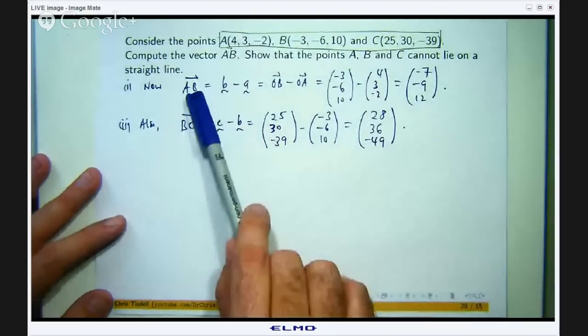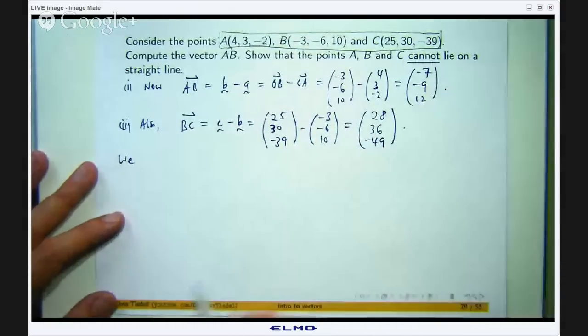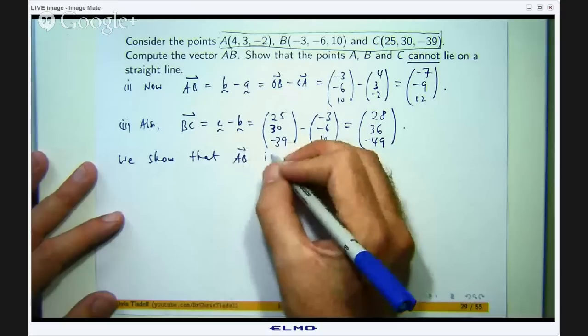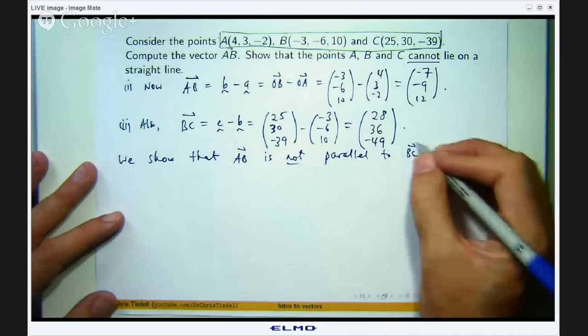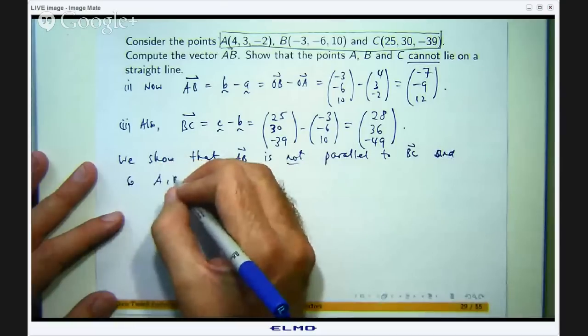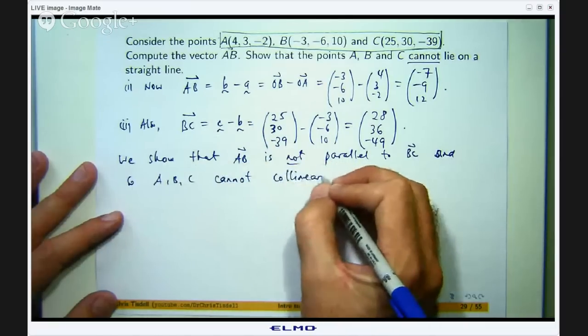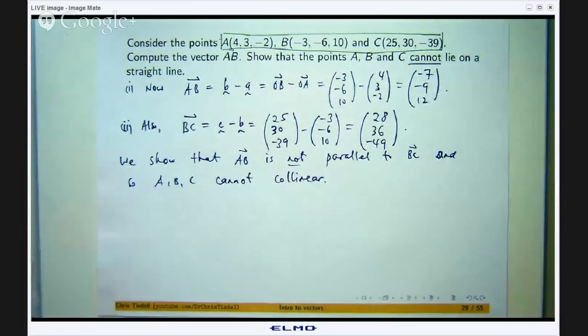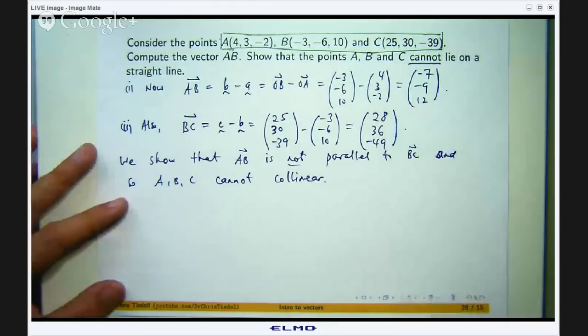So now the question is, is this vector parallel to this vector? Remember what we want to do is show that these points cannot lie on the same line, so we show that AB is not parallel to BC and so A, B and C cannot be collinear. So how do we show that this vector is not parallel to this vector? Well, we know that two vectors are parallel if one is a scalar multiple of the other. In other words, there is some number such that this vector times that number equals this vector, or vice versa.